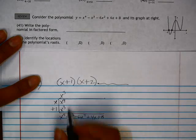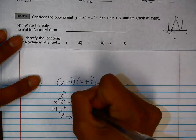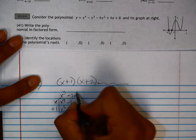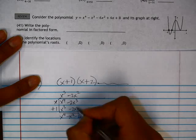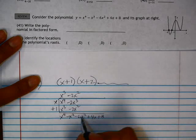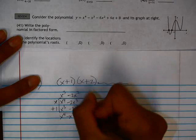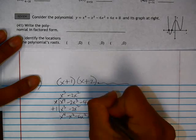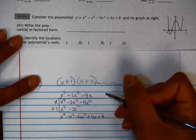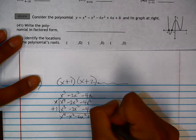We want a negative x cubed, so this should be negative 2x cubed. This would be negative 2x squared. Multiplied by 1 is still negative 2x squared. We want negative 6x squared, so this needs to be a negative 4, which would make this a negative 4x.